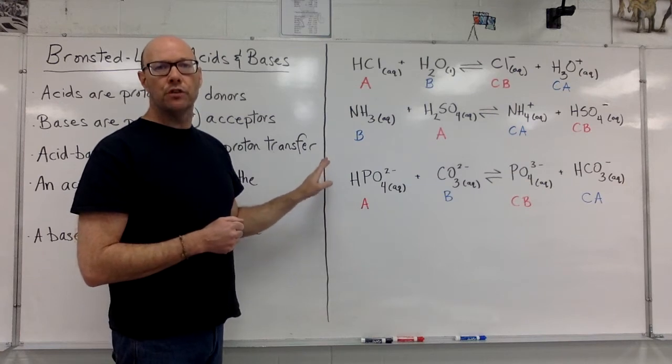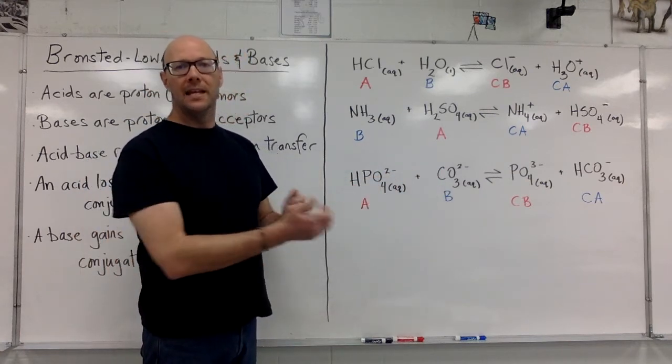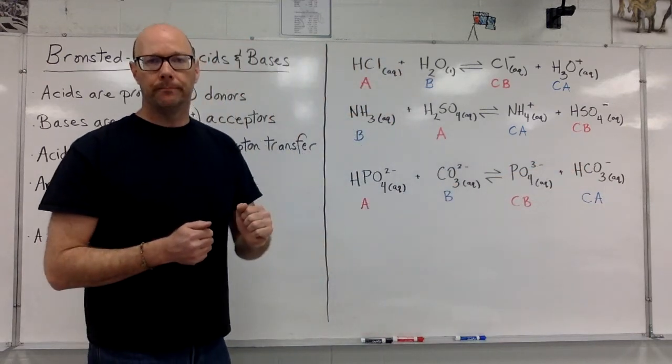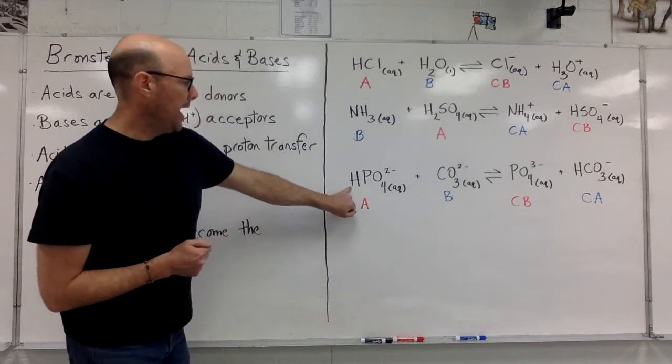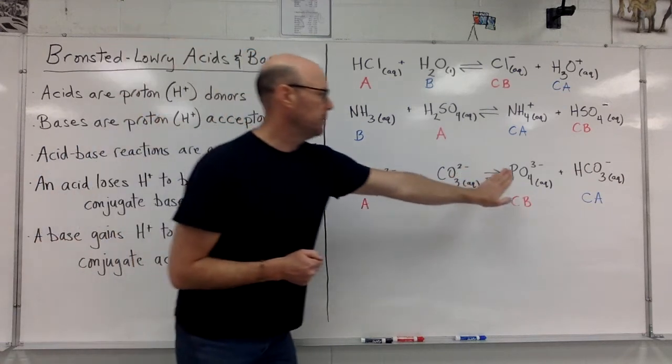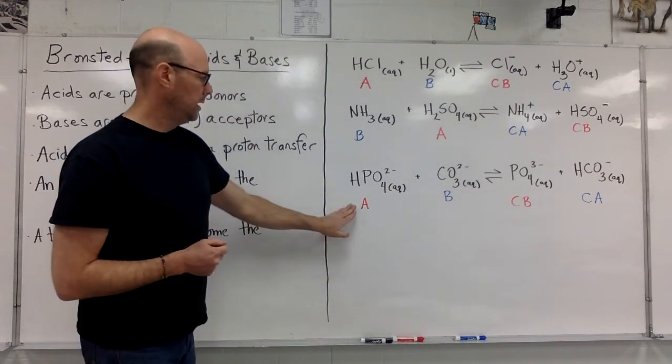In the third example, a hydrogen phosphate ion reacts with a carbonate ion in equilibrium with a phosphate ion and a hydrogen carbonate ion. HPO4^2- loses an H+ to become PO4^3-. If it's losing an H, it's the acid.